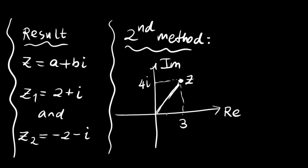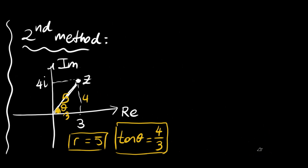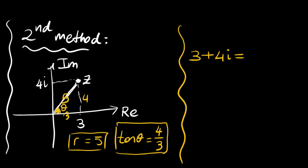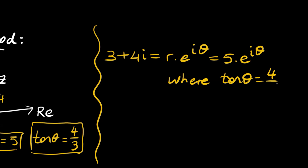The modulus r equals 5 by the Pythagorean theorem — this is a 3-4-5 triangle. So r equals 5, and the angle theta satisfies tan(θ) equals 4 over 3. We can write 3 plus 4i in Euler form as 5 times e to the power iθ, where tan(θ) equals 4 over 3.